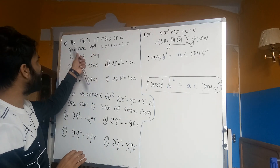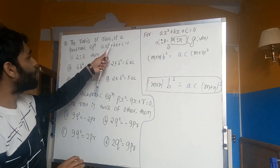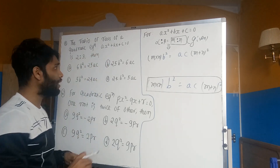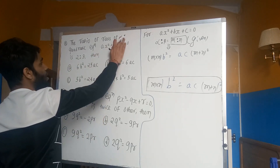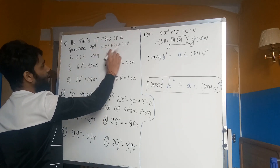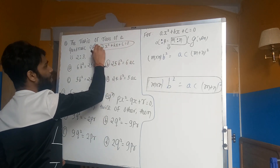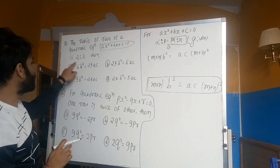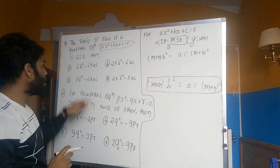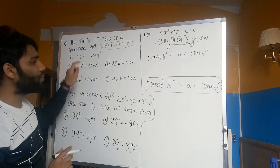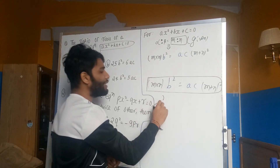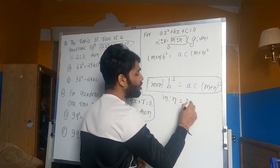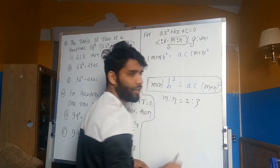So, this is m is to n. If m is to n, then we will give 2 is to 3.